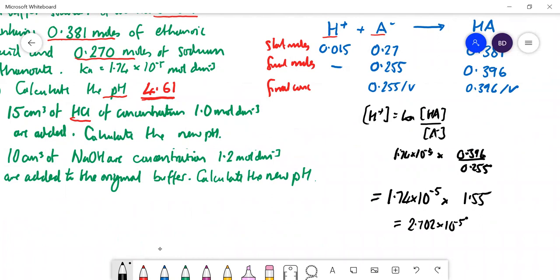So minus log it. The negative log of that is 4.57. pH is equal to 4.57. Let's look at the number we said. So 4.57 has gone down from 4.61 and it's gone down by a very small amount, but it has gone down because you're making it slightly more acidic. So that looks fine.